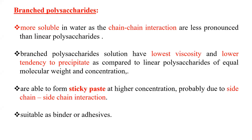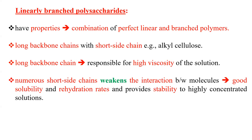Branched polysaccharides are used as binders or adhesives in the formation of various food products. Linearly branched polysaccharides, as the name explains, have properties that are a combination of perfectly linear unbranched polymers. They have long backbone chains with short side chains, for example alkyl cellulose. The long backbone chains are responsible for high viscosity of the solution, while numerous short side chains weaken interactions between molecules, providing good solubility, rehydration rates and stability to highly concentrated solutions.